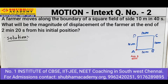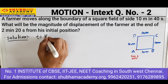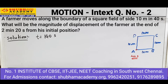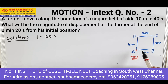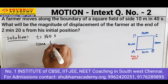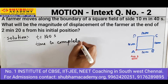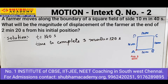The farmer completes one round in 40 seconds. The total time given is 140 seconds. He completes one round in 40 seconds, another round in another 40 seconds, a third round in 120 seconds. Time to complete three rounds is equal to 120 seconds. Now how much time is left? 20 seconds are left.